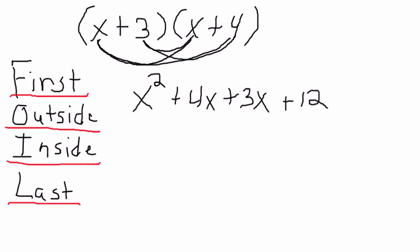After we have multiplied the numbers, we have to do something called combining like terms. Combining like terms basically means we're going to combine the numbers that have the same exact variable. For example, we have 4x and we have 3x. They both have an x, so we're going to add them. We cannot add the x squared, however, because x squared has an exponent of 2, whereas these x's don't have an exponent — they're just a regular x. So we're going to add these x's, the 4x and the 3x, and we're going to have 7x.